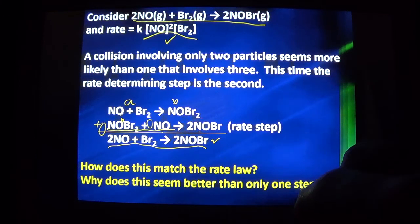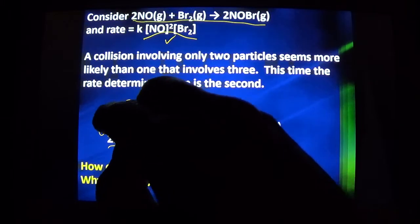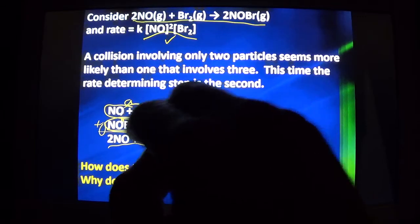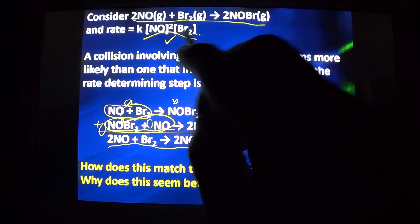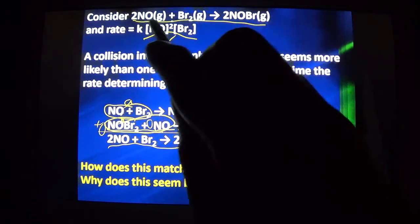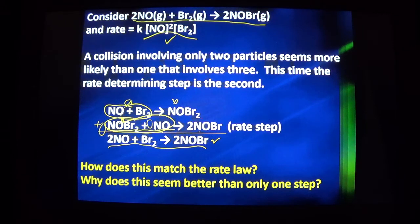Why is this better than one step? Here we have only two things needing to collide. Here we have only two things needing to collide. If I did it this way, like the overall equation would suggest, I would need three things to collide. A two collision process seems more likely to happen than a three collision process. It is that simple. That's reaction mechanisms. That's as much as we can get into it without significant more time development in the laboratory.